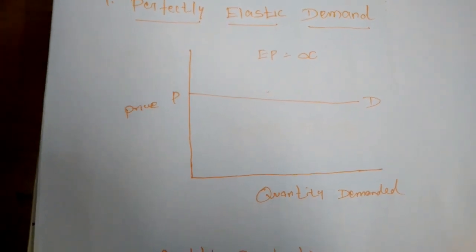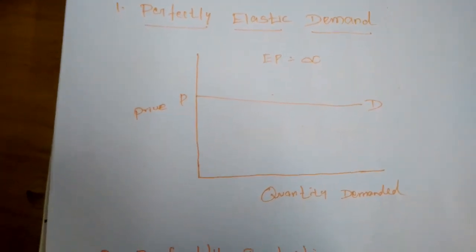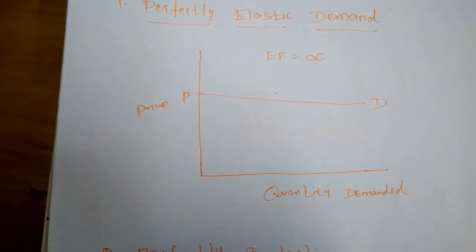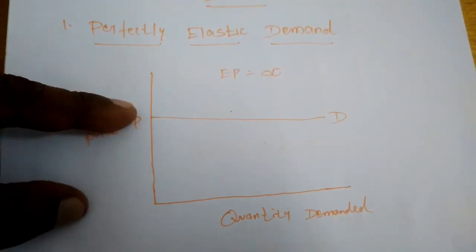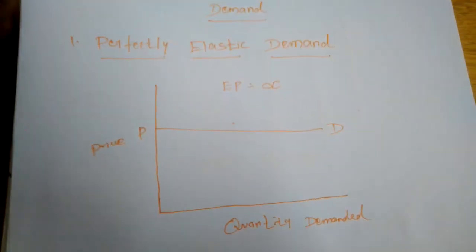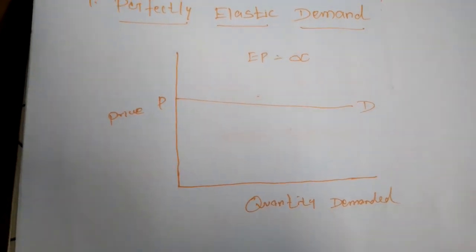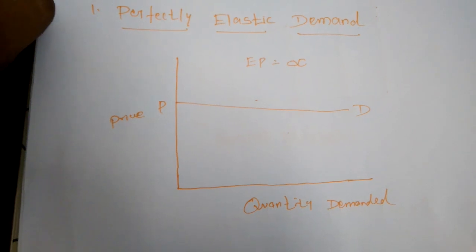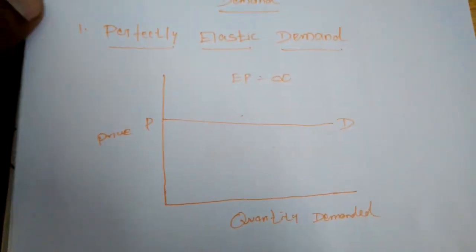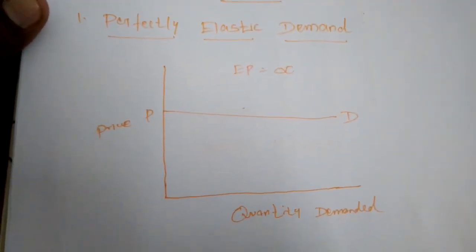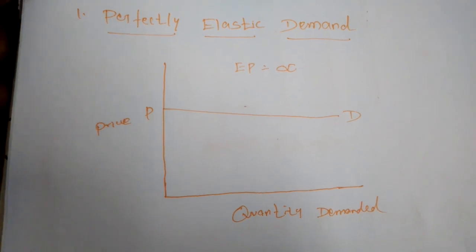In perfectly elastic demand, even a small rise in price can result in a greater fall in demand, even to zero in some cases. A slight fall in price can result in demand increasing to infinity. The price remains at OP, but quantity demanded increases without limit. The demand curve for perfectly elastic demand is a horizontal straight line parallel to the x-axis, because there is no stopping point to demand due to slight price changes.